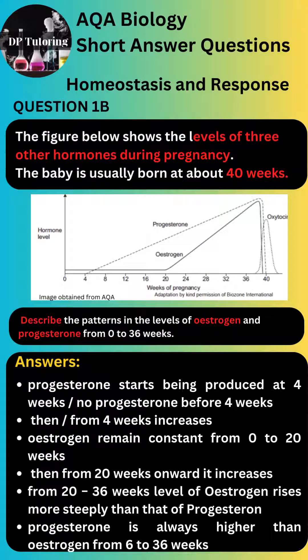Three: estrogen remains constant from 0 to 20 weeks. Four: then from 20 weeks onward it increases. Five: from 20 to 36 weeks, the level of estrogen rises more steeply than that of progesterone.